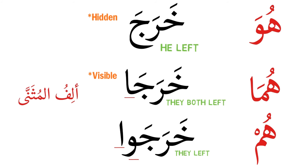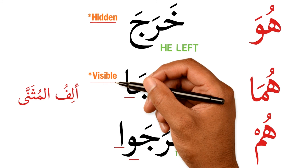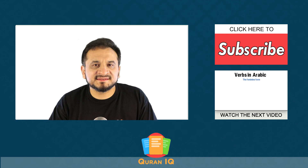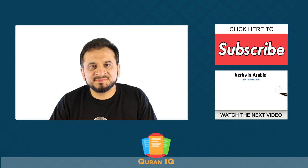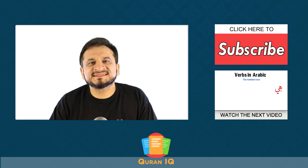Let's summarize these three: we say خرج for هو, خرجا for هما, and خرجوا for هم. Notice that in the first pronoun the ضمير is مستتر, and in the other two cases it is visible. In the next lesson, inshallah, we'll talk about the feminine third person form. جزاكم الله خير.